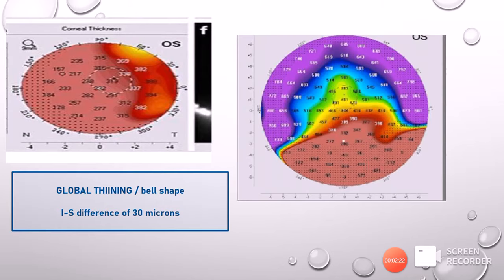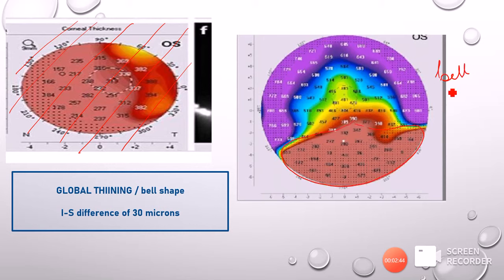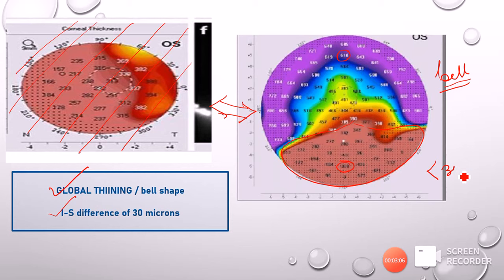Based on the thickness map profile shapes, you can also identify diseases. A globally reddish thickness map indicates global thinness, seen in keratoglobus. An inferior thinning in a bell-shaped map is seen in pellucid marginal degeneration. These shapes on the tomogram are definitely risky. Additionally, the difference between the inferior and superior thickness measured symmetrically should be less than 30 microns. More than 30 microns is risky.